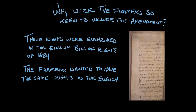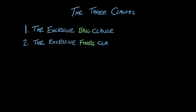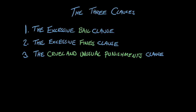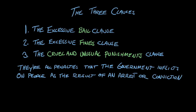If you look at the Eighth Amendment, there are three clauses: the excessive bail clause, the excessive fines clause, and the cruel and unusual punishments clause. These all have one thing in common — they are all penalties that the government inflicts on people, usually as the result of either being accused or convicted of a crime. If you've been arrested and you're waiting for trial, very often your only way to get out of jail before trial is to make bail. And after you've been convicted, the court might impose a fine or some other kind of punishment.